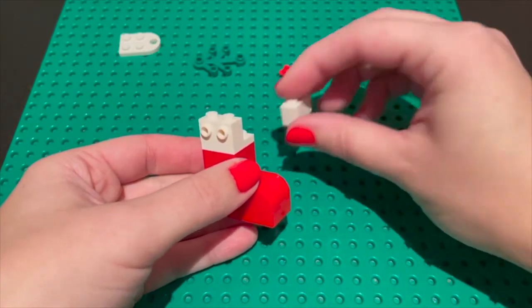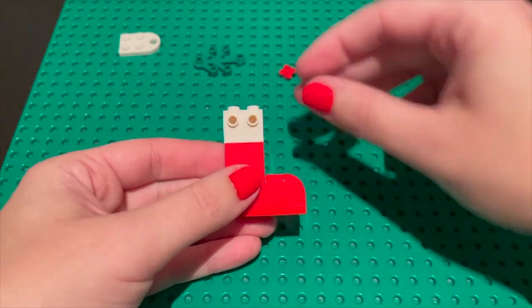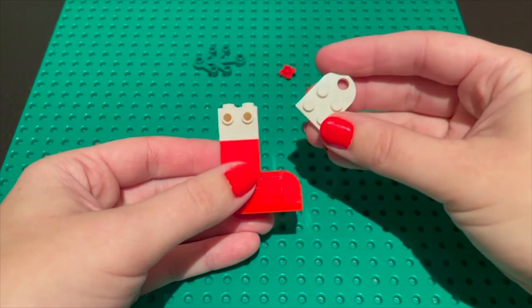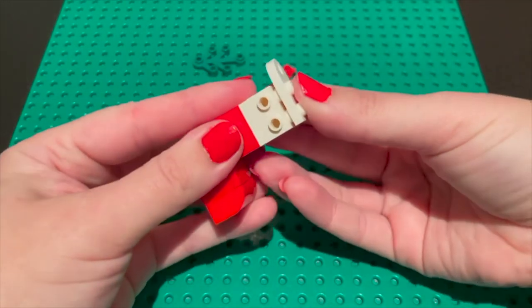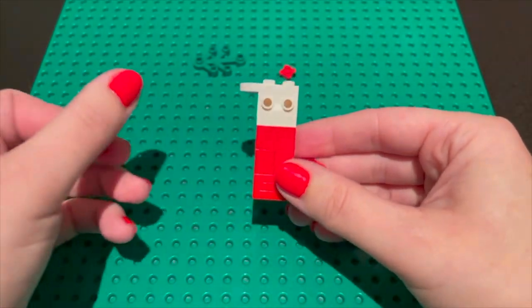Next we're going to take a one by two white brick to fill in the space on the other side. Then you're going to take a two by two white plate. You can use just a square or you can use one with a hole so that you can hang it on your tree like an ornament. This is going to go on the top holding it together and stick out the back.